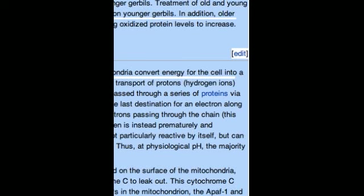In the electron transport chain, electrons are passed through a series of proteins via oxidation-reduction reactions, with each acceptor protein along the chain having a greater reduction potential than the previous. The last destination for an electron along this chain is an oxygen molecule.